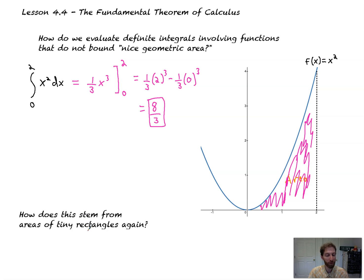How does this stem from areas of tiny rectangles? Well, this is the height of every little rectangle, this is the width of every tiny rectangle. This means add up infinitely many of them, and it ends up resulting in this process. It's very cool. I'll go over the concept of why in a different video.